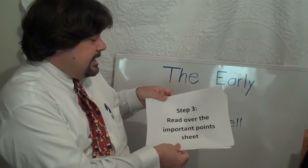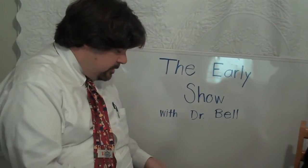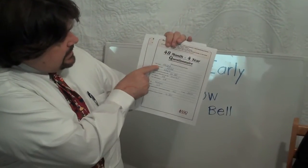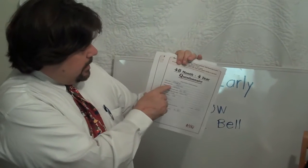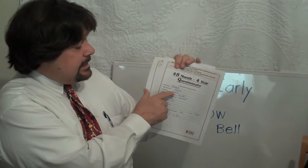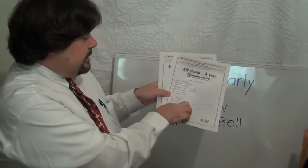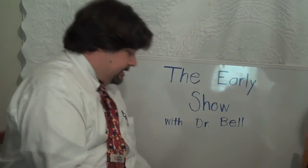Then the next step is to fill out the information page. It's really easy to fill out — you just fill it out with the child's name. I'm using an anonymous name: Child A. The child's birth date, which was 5-27-2008, and today's date, which is 5-29-2012. So he just turned 48 months — this is the perfect screen for him. Then I filled in the rest of the information and went on to the next step.